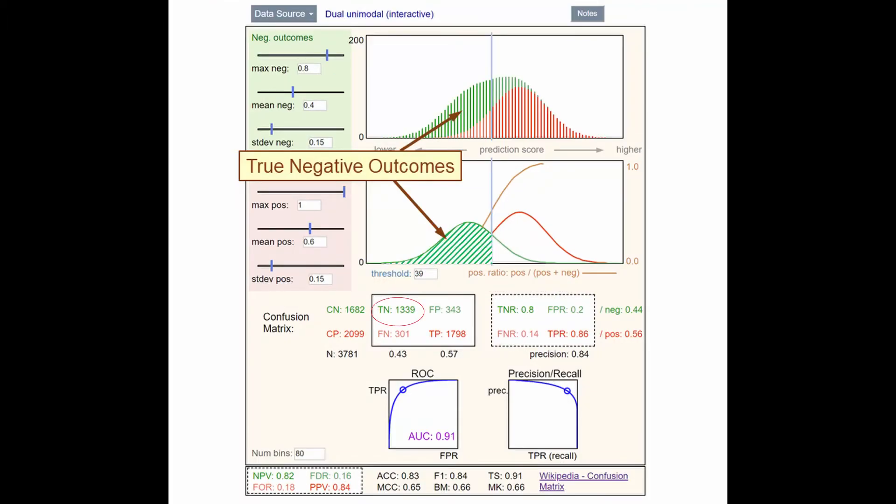True negatives are green, or negative outcomes, to the left of the decision threshold. False negatives are red, or positive outcomes, that lie on the left side of the decision threshold. Somehow these samples were assigned prediction scores that are too low.